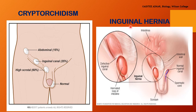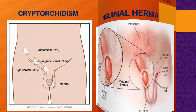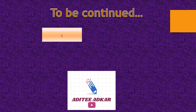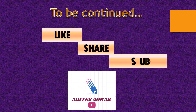Another condition is known as inguinal hernia. What happens here is that a loop of the intestine passes through the inguinal canal and enters the scrotum. This can be very painful for the person and can be corrected by surgery. So that was an overview of the human male reproductive system. In the next video, we will be discussing the female reproductive system.